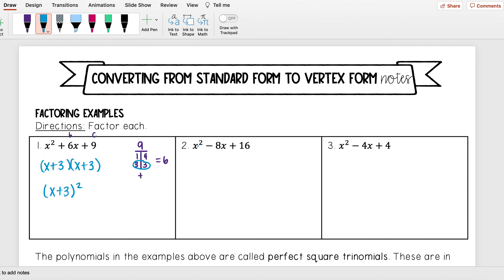Let's try another one. So here, I'm looking for two numbers that multiply to 16. But then I want them to add to equal negative 8.